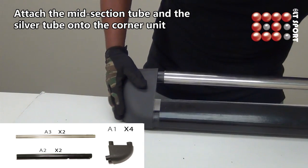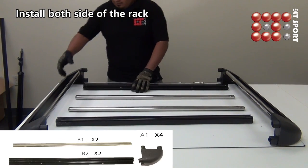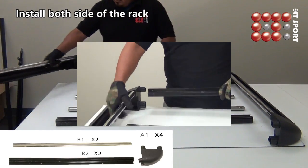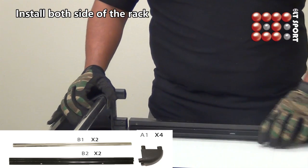Please repeat the same method for the other side. Now we are going to install both sides of the rack. Simply attach all the tubes onto the attachment unit.